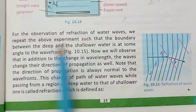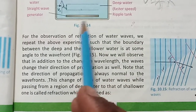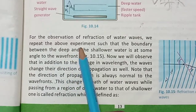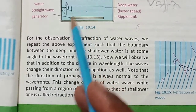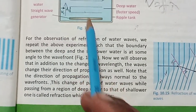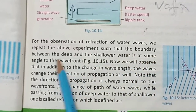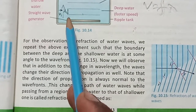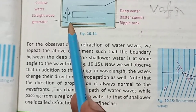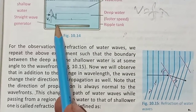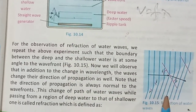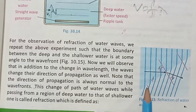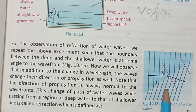The third property is refraction. First we observed reflection, then we studied speed. Now the third observation is refraction. For the refraction of water waves, we repeat the previous experiment where we reduced the depth in the ripple tank. We divided the tank such that the boundary between the deep and shallow water is at some angle to the wavefront. This bending of the wave direction is called refraction of waves.